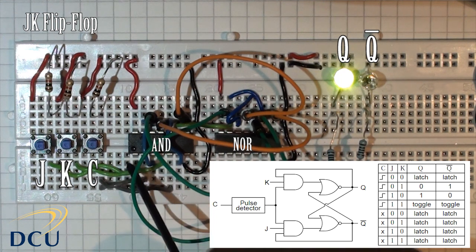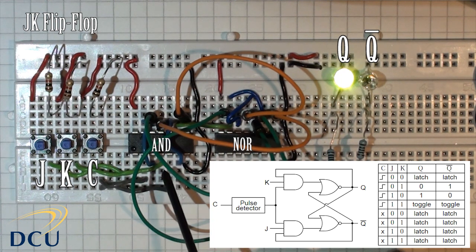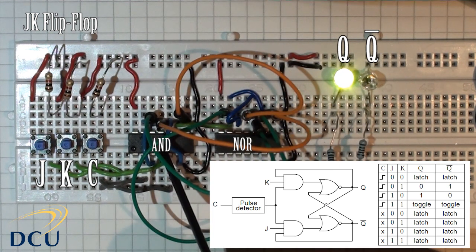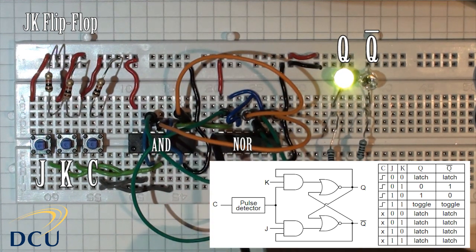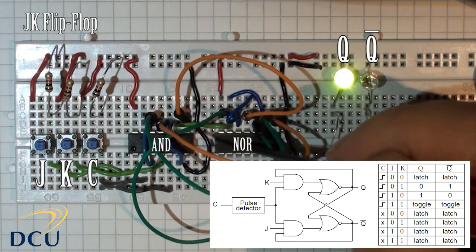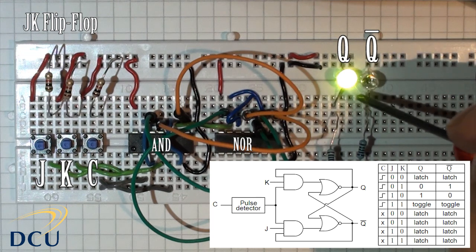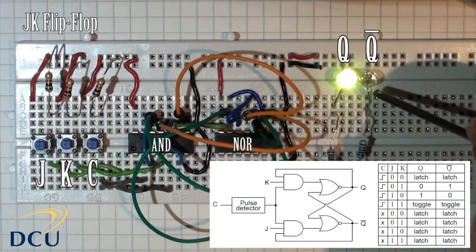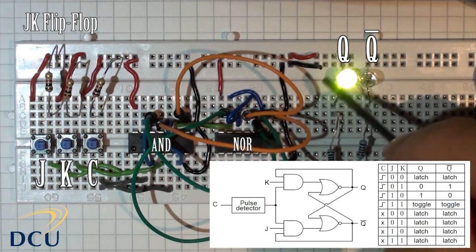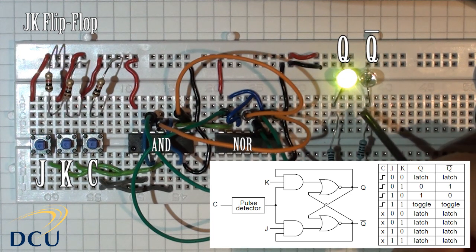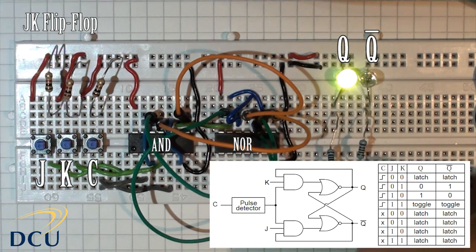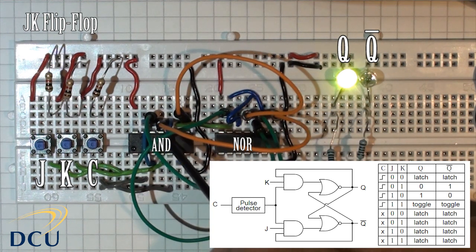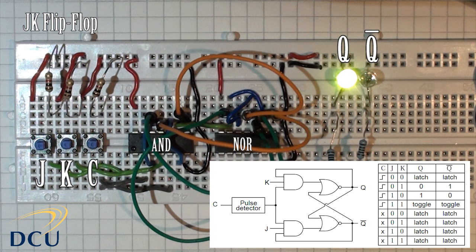On this side, J, K, the clock, and the feedback from Q and Q bar come in as inputs to the AND gates. From this we provide outputs to the next stage, which is the NOR gates. The green LED represents Q and the unlit red LED represents Q bar — only one of these LEDs should be lit at any one time. These outputs are connected through resistors and feed back into the AND gates at the start. You can try and wire this yourself. What I'm going to show you now is the JK flip-flop's operation.